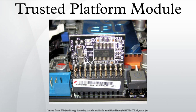Remote attestation creates a nearly unforgeable hash key summary of the hardware and software configuration. The program hashing the configuration data determines the extent of the summary of the software. This allows a third party to verify that the software has not been changed.